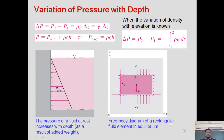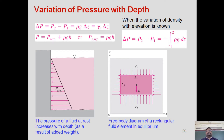Hi dear learner. Today I am starting my discussion with pressure variation with depth. We stopped the last class because of some technical error, so today I am going to cover that. To measure pressure variation with depth we have to make use of the hydrostatic law. The hydrostatic law basically states that change of pressure with height is directly proportional to the specific weight of the liquid.